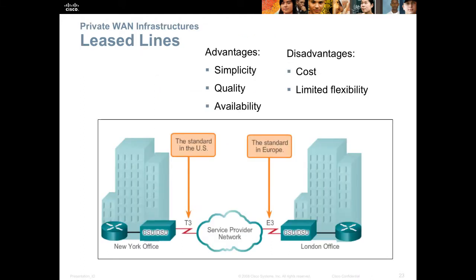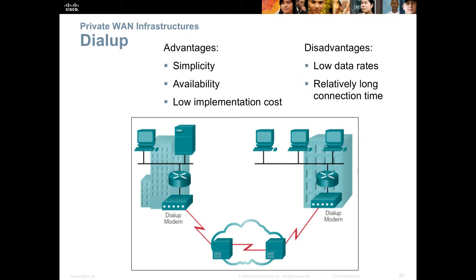A leased line is a private network that is very expensive and has limited flexibility. You have to wait weeks or months for them to hook it up and it can't be rerouted easily because it is literally physically cabled from point A to point B. The advantages are it's always available, always high quality — if they tell you it's 1.5 megabits per second, it's always exactly that — and it's simple and secure. Dial-up offers availability and low cost; you can usually find a phone line pretty much anywhere, and it's cheap to implement. The disadvantages are low speed, long connection time, and reliability issues.